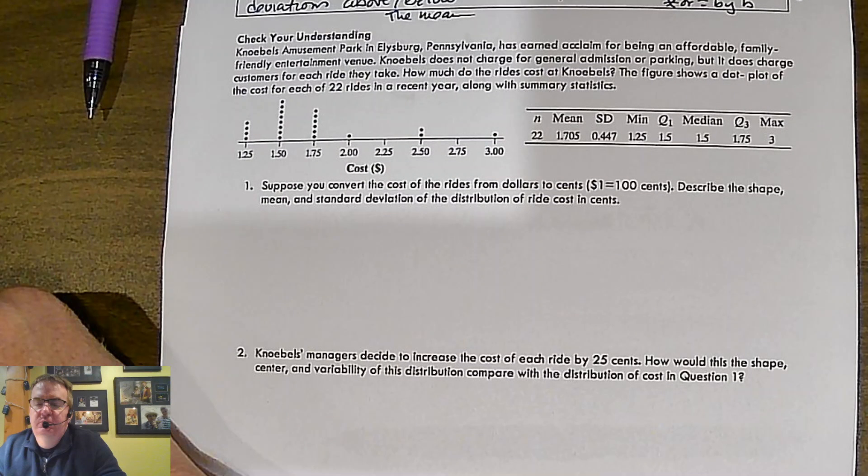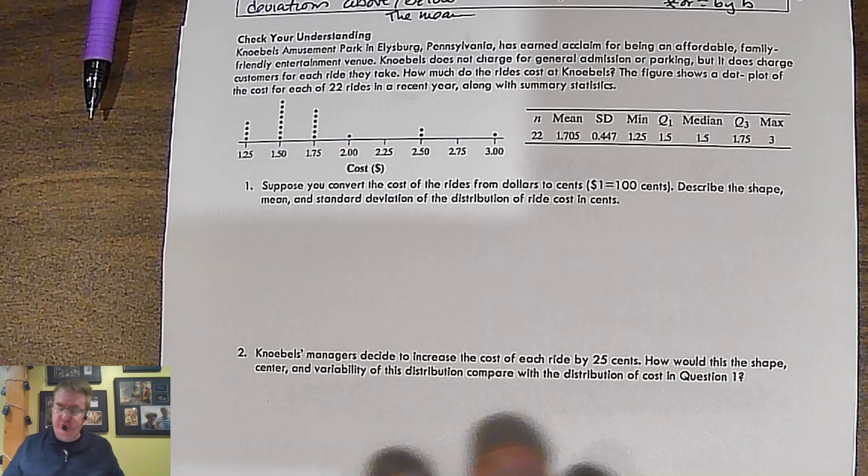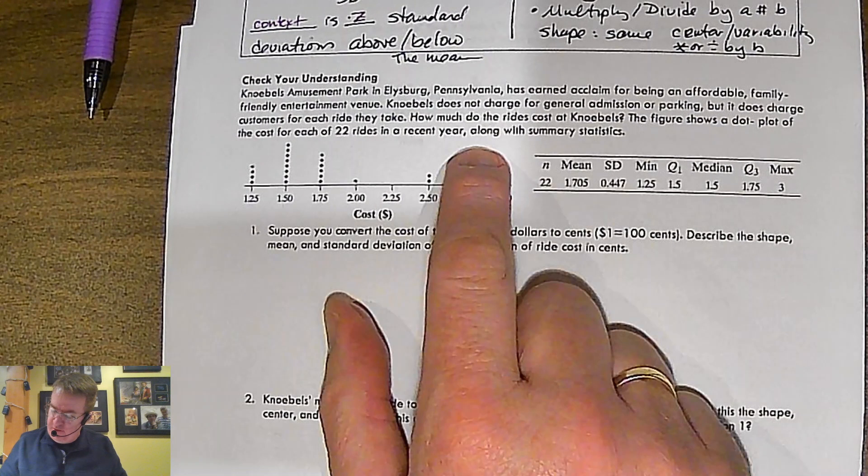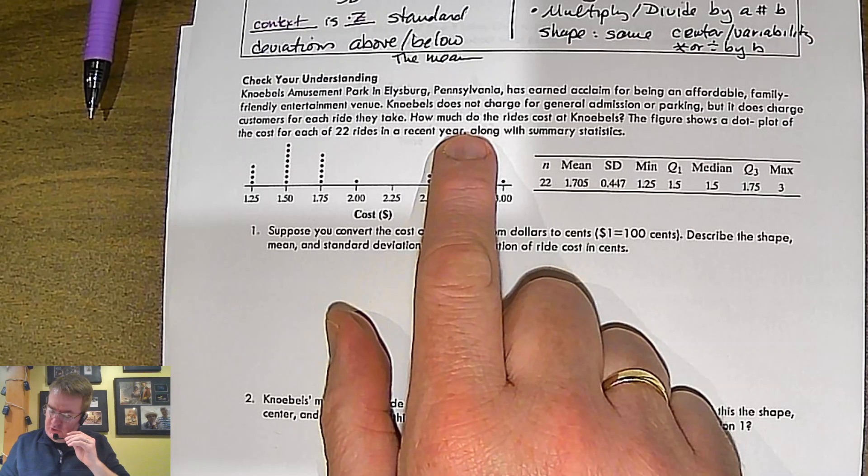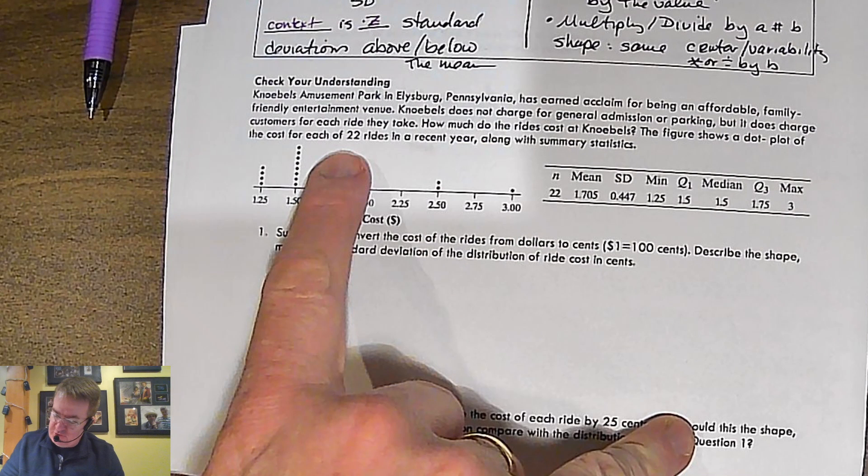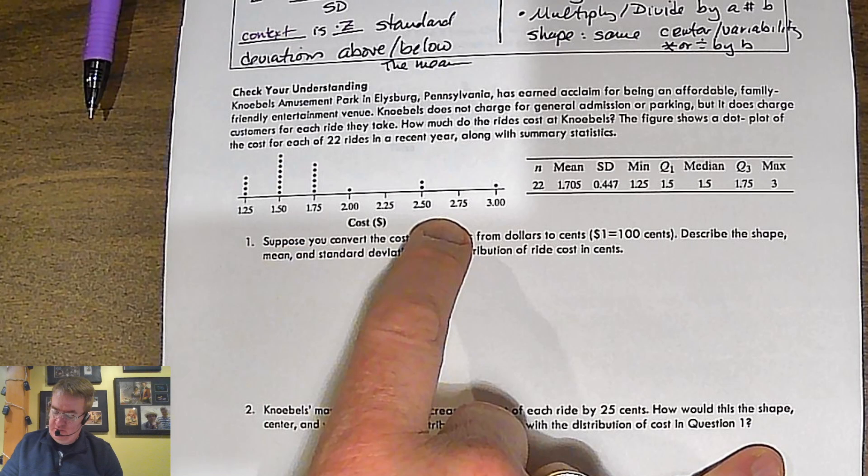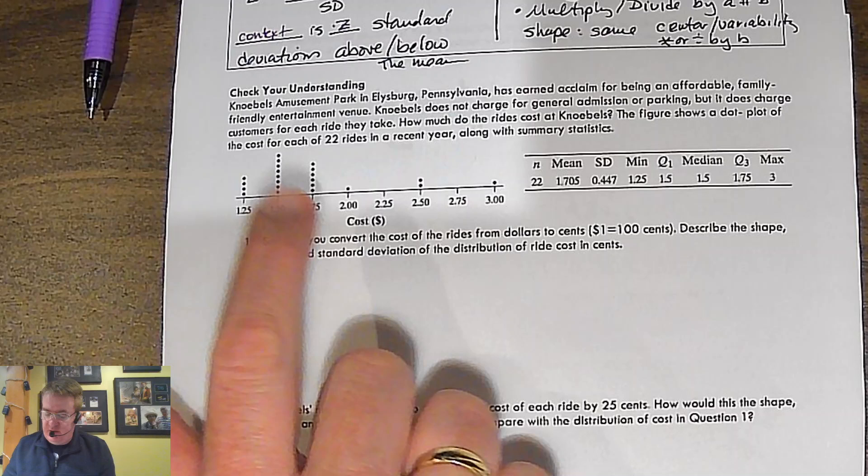All right. Hey. I hope that went well for you. All right. So we've got Noble's Amusement Park. Family friendly entertainment venue. Noble's does not charge for general admission and parking, but it does charge for each ride they take. Figure shows a dot plot of the cost for 22 rides in a recent year, along with summary statistics. There's summary statistics. There it is. So it looks like this is skewed to the right. We've got this outlier of $3 for one of the rides. Most of the rides kind of fall in this $1.25 to $1.75 range.